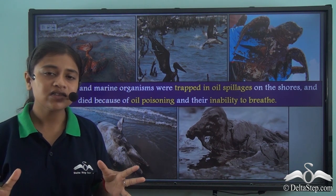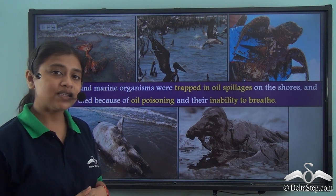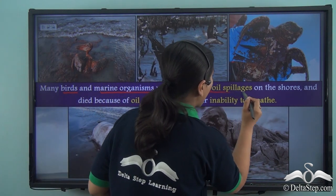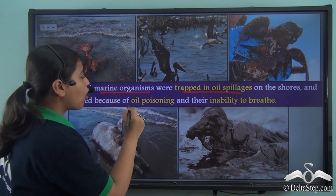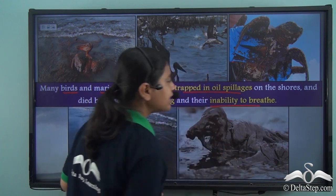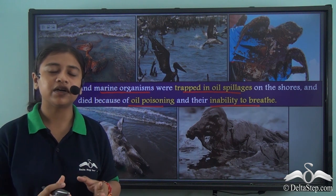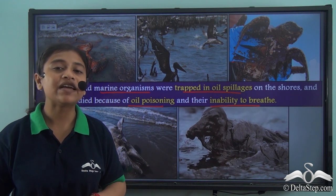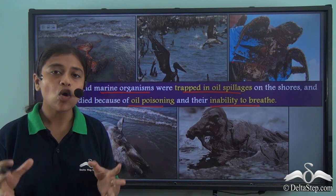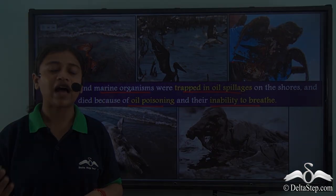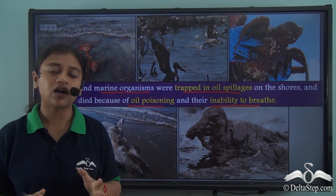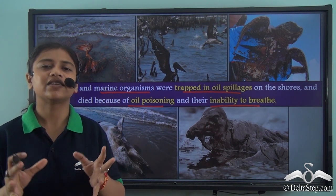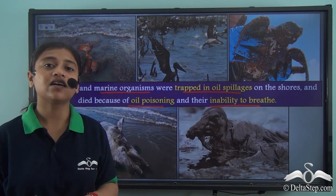The spill was immense, causing huge damage to marine plants and animals. Many birds and marine organisms were trapped in the oil spillage on the shores and they all died because of oil poisoning and the inability to breathe. The oil prevented marine animals and birds from breathing properly, led to suffocation, and eventually led to the death of a large number of marine species. It also led to the soaking of the birds' wings, which withdrew their ability to fly and eventually led to death because of hunger. Besides harming such large numbers of marine animals and plants, the oil spill also destroyed the beauty of many islands in the Gulf of Mexico.